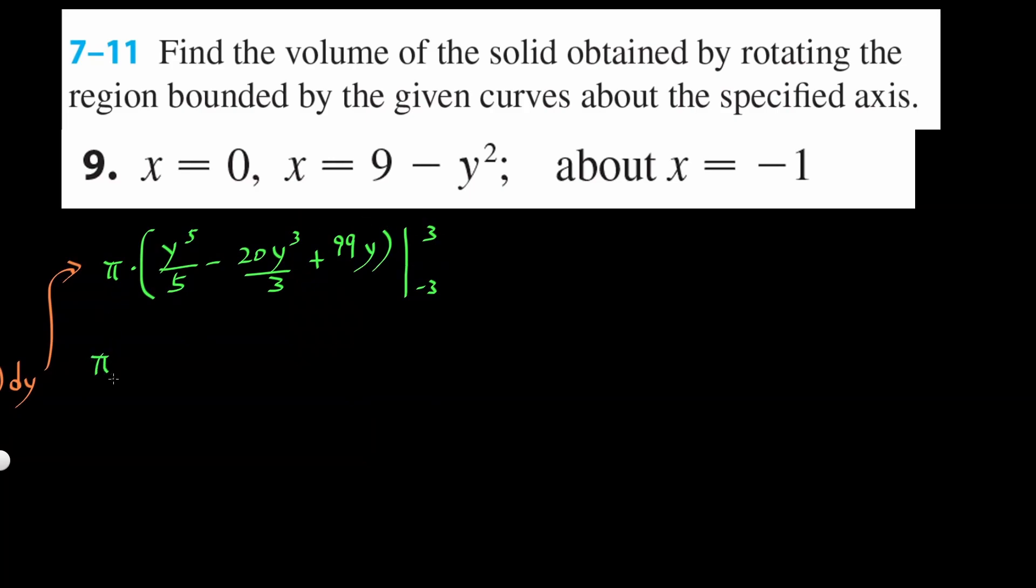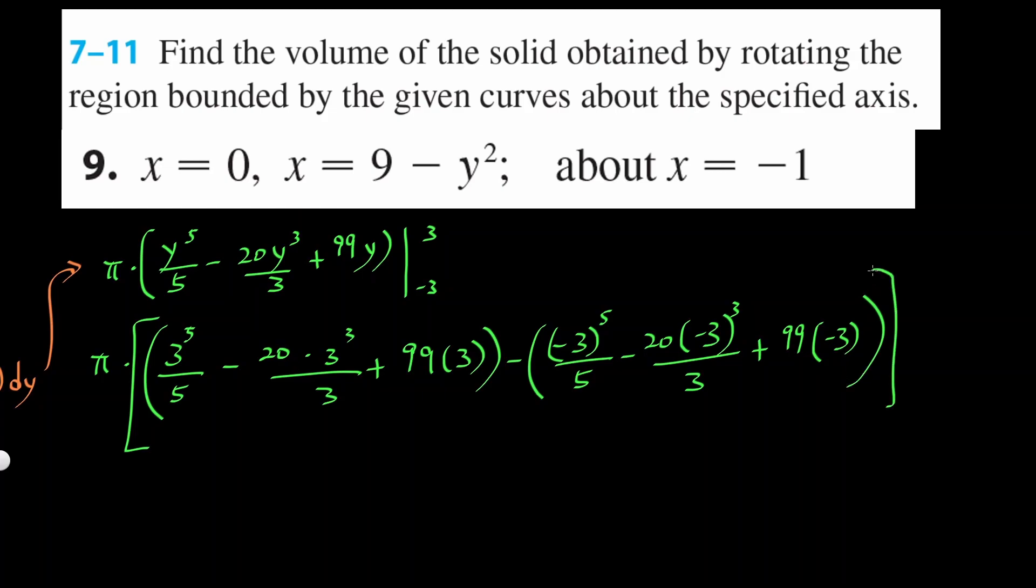So now ready to plug it in. So it's pi times 3 to the fifth power over 5, minus 20 times 3 cubed over 3, plus 99 times 3. All that minus, now you plug in negative 3. So negative 3, everything to the fifth power over 5, minus 20 times negative 3 cubed over 3. You really have to be careful here. Plus 99 times negative 3. Everything multiplied by pi.